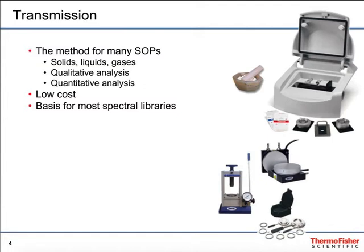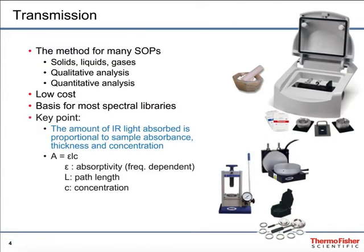The key point for transmission is that the amount of IR light absorbed is proportional to three things: the absorptivity, symbolized as epsilon; the path length, L; and the concentration, C, of the number of molecules in the beam. The epsilon gives the spectrum its shape, the absorptivity being a function of each wavelength or wavenumber in the spectrum, and C, the concentration, is where the quantitative information comes from.